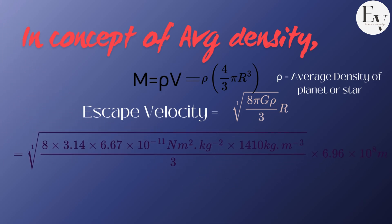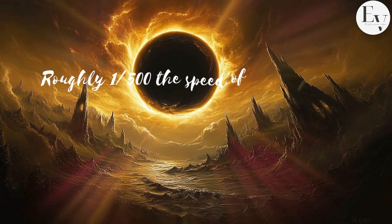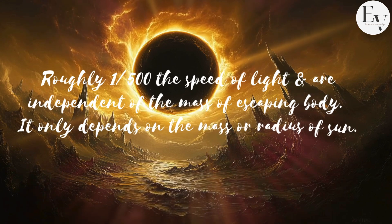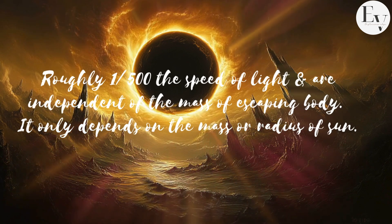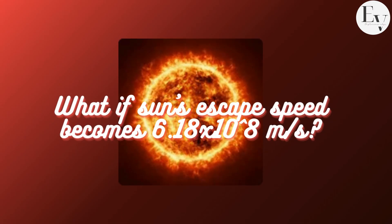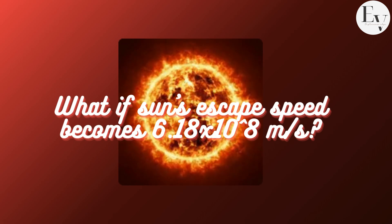Using either form of these equations, you can show that the escape speed for a body at the surface of our sun is 6.18 × 10^5 meters per second — about 2.2 million km per hour or 1.4 million miles per hour. This value is roughly 1/500 the speed of light. It is independent of the mass of the escaping body and depends only on the mass and radius, or average density and radius of the sun. Now think: what if the sun's escape speed became 6.18 × 10^8 meters per second instead?